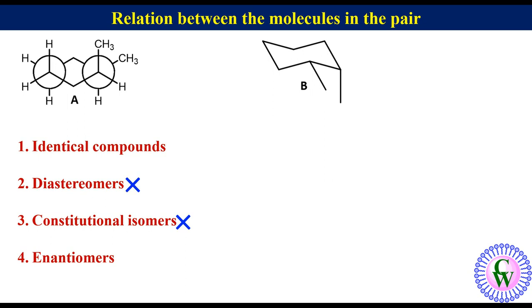Now, there are two remaining options: either these are identical compounds or enantiomers. The better way to find the relation between these two is to make Newman projection formula of B as given for A.